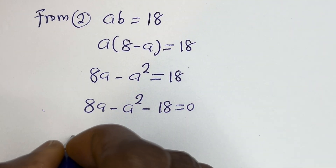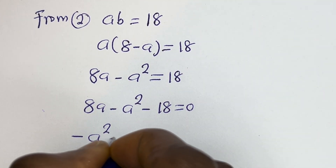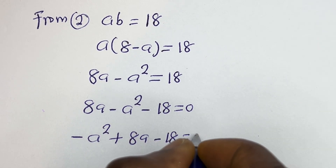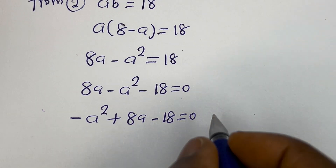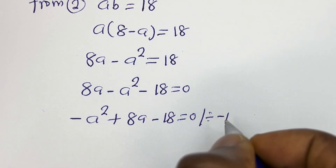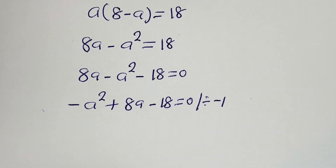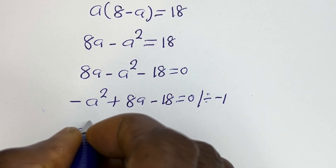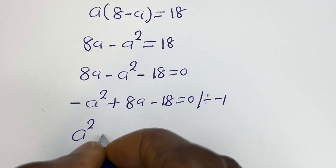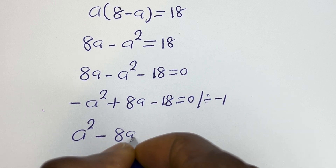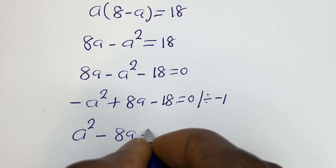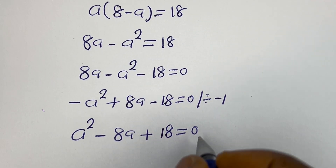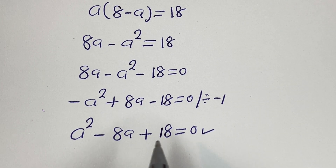We can write this as minus a squared plus 8a minus 18 is equal to 0. Now we divide all through by minus 1, giving us a squared minus 8a plus 18 is equal to 0. This is a quadratic equation which can be solved using the quadratic general formula.